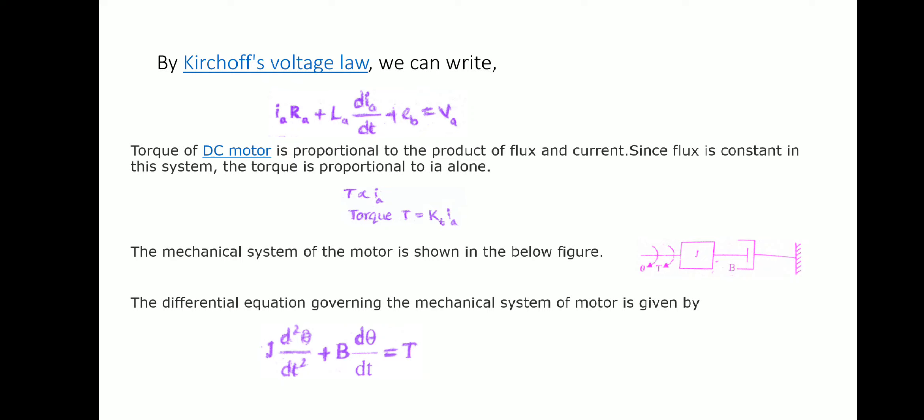The final output is the rotation of the motor, represented by the angular displacement θ. The governing differential equation for the mechanical system is: J·(d²θ/dt²) + B·(dθ/dt) = T.